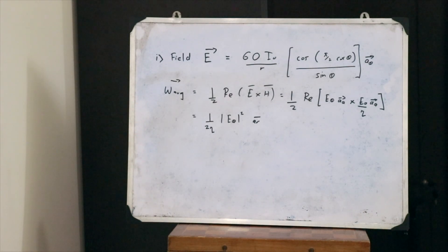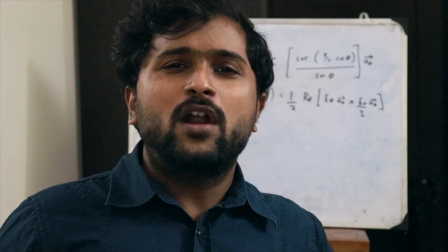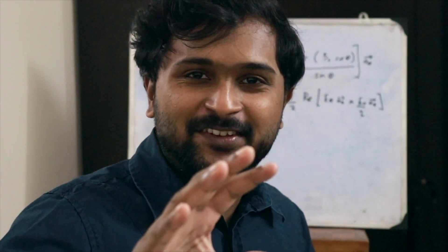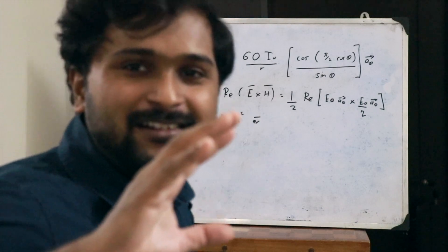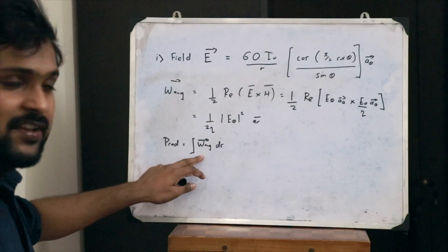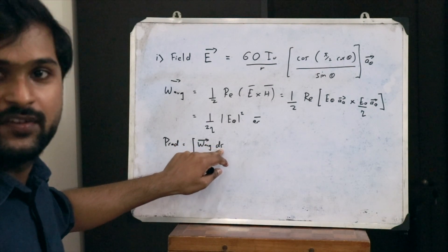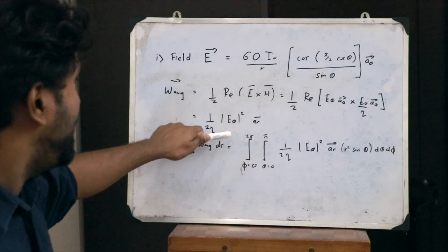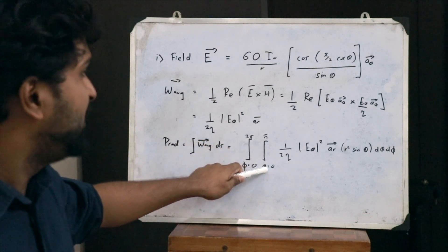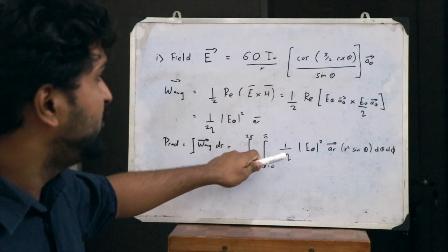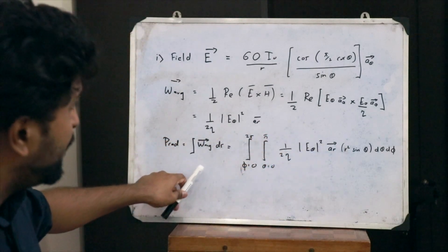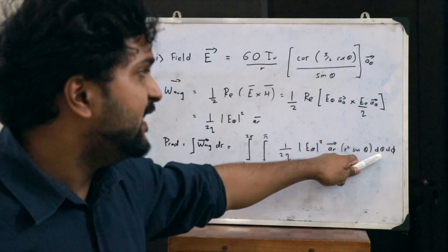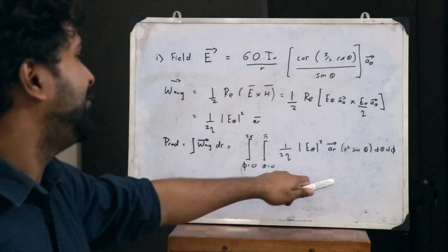The radiated power is the surface integral of the average radiated power density over a particular surface. So P_rad = ∬ W_average · dS, which becomes a double integral with phi from 0 to 2π and theta from 0 to π of [E_theta² / (2·eta)] · R² sinθ dθ dφ. That is how we set up the radiated power integral.